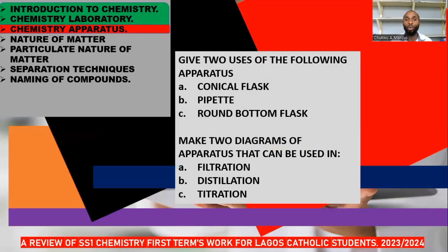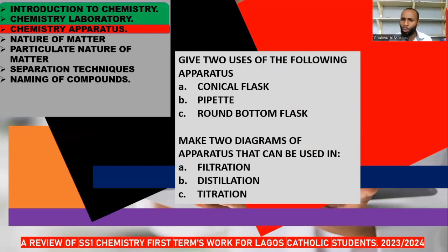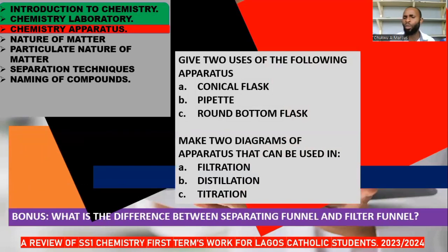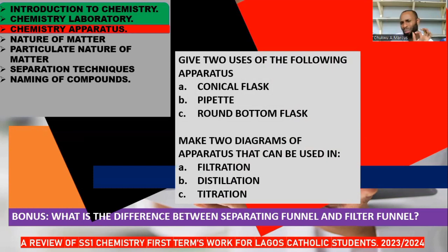What about titration? Titration is mostly what we do in WAEC, NECO, and GCE to identify the concentration of a substance. In titration, we make use of the retort stand with clamp, conical flask, burette, pipette, and ties. A bonus question: what is the difference between a separating funnel and a filter funnel? A separating funnel is used to separate immiscible liquids, whereas a filter funnel is used to separate insoluble solids.